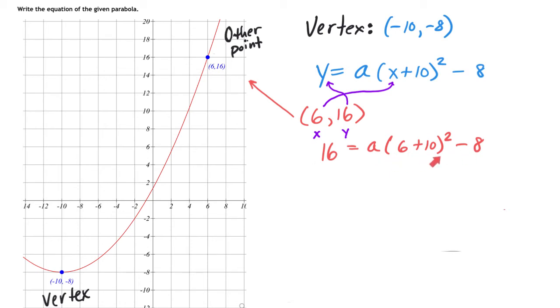What we want to do next is calculate this parentheses squared part. What does that equal? Well, 6 plus 10 is 16, and then 16 squared is going to give us 256.